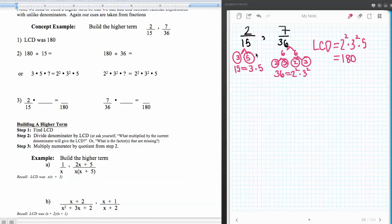So if I had two fifteenths and seven thirty-sixths, I might want the higher terms for those. So the first thing I did was find their least common denominator like we did in our last video. Now the next thing I want to do is build the higher terms. So I'm going to write two fifteenths as something one hundred and eightieths. And so then the seven thirty-sixths also I will be rewriting as something one hundred and eightieths.